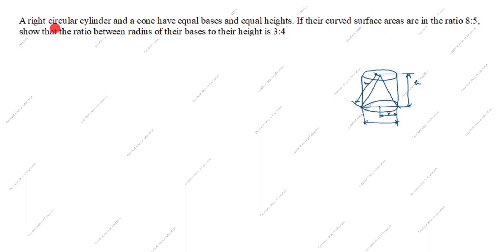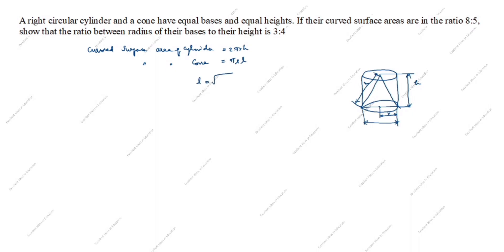Curved surface area of cylinder and curved surface area of cone — formula. First we will write: curved surface area of cylinder is equal to 2πrh. Next, curved surface area of cone is equal to πrl, where l is slant height. How we will find l? l is equal to root of r squared plus h squared. This is the formula.